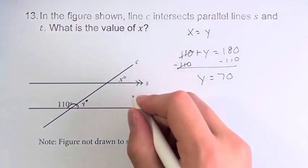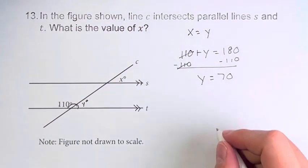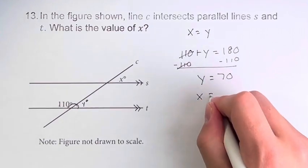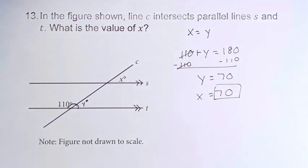Therefore, Y is equal to 70 degrees. And since X is equal to Y, X is equal to 70, which is going to be your final answer. Thank you.